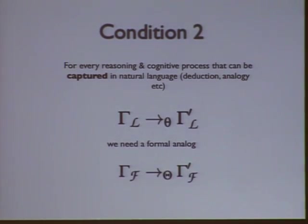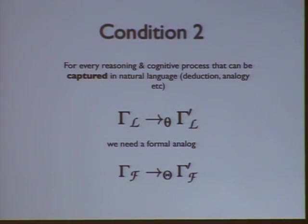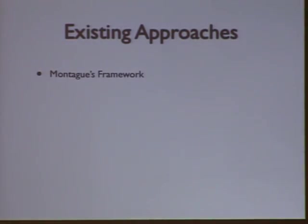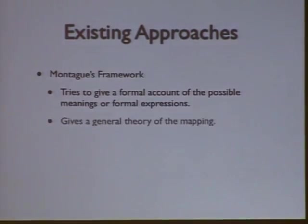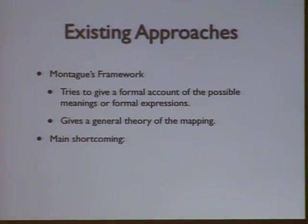When I was saying we want to capture all reasoning processes that humans carry out using this formal language, we can write it out this way: for every reasoning and cognitive process that can be captured in natural language, we need a formal analog within our formalization. This should be pretty simple — I'm just going to go to the actual formalization we're proposing here.